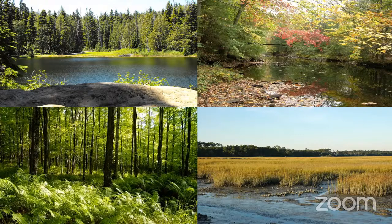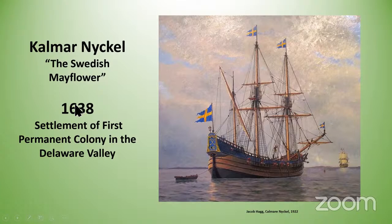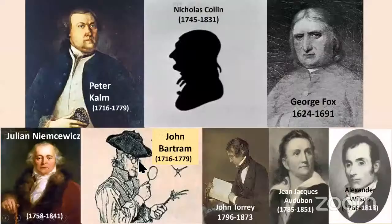In 1638, the first actual settlement in the Delaware Valley happened when the Swedes arrived — the Kalmar Nyckel, the Swedish Mayflower — settling at what's now Wilmington on the Christina River. They've made a mock-up of the ship, about a quarter of the original size, which is now docked in Wilmington. You can actually take cruises on it.